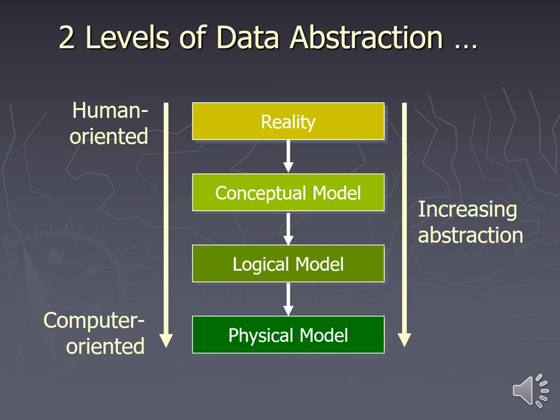This graph shows what we're looking at. Starting at the top, as a human being we look at reality, then we conceptualize what we're looking at into something more abstract. We then move into this logical idea of what comes before what, so it can finally be loaded into a physical model of a computer-oriented database management system.